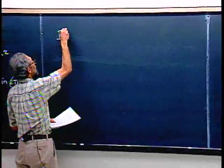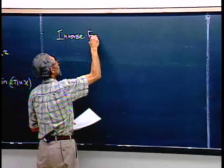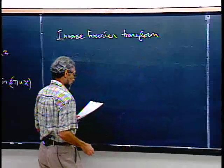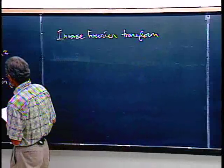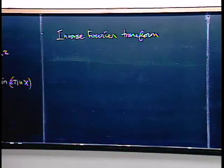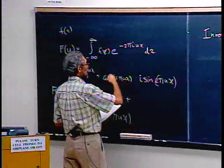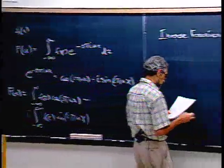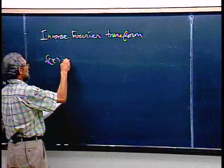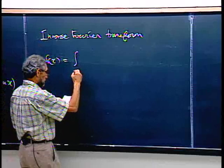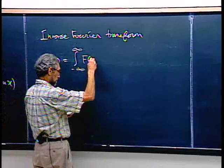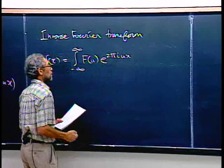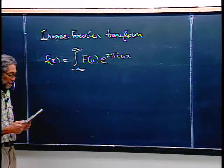So F of u is the integral with cosine 2 pi u x plus i times the integral with the sine. You can get an inverse Fourier transform to go backwards. The sign difference: if you have minus an angle, the cosine is the same but the sine is minus. For the inverse transform, we get back f of x by doing the same kind of integral only with a plus sign instead of minus.